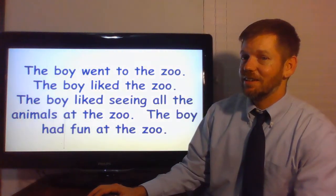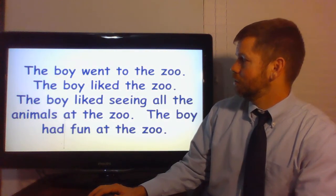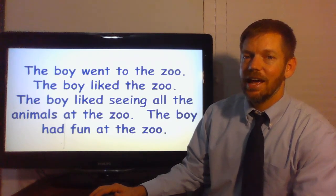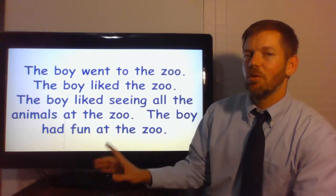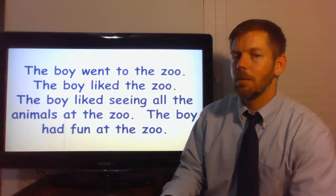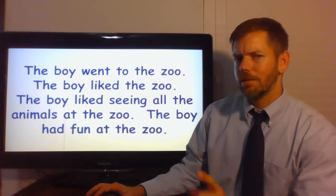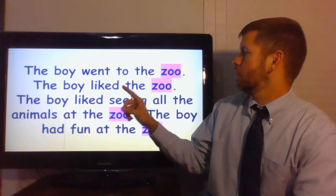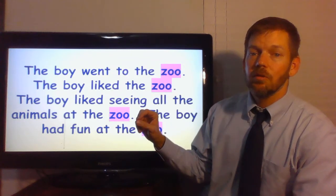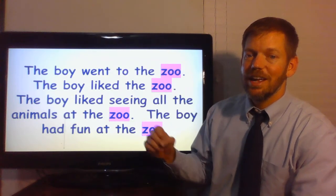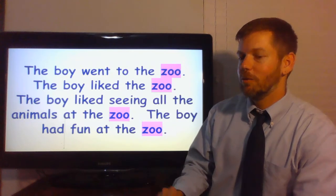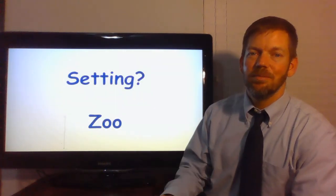Let me read you this story: The boy went to the zoo. The boy liked the zoo. The boy liked seeing all the animals at the zoo. The boy had fun at the zoo. What is the setting for that story? Where did that story happen? Let's look at some of the words. The boy went to the zoo, the boy liked the zoo, the boy liked seeing all the animals in the zoo, and the boy had fun in the zoo. So the setting — where the story happened — would be the zoo.